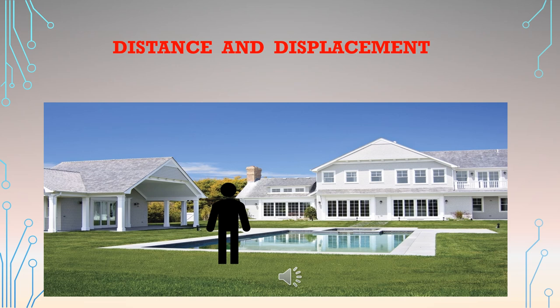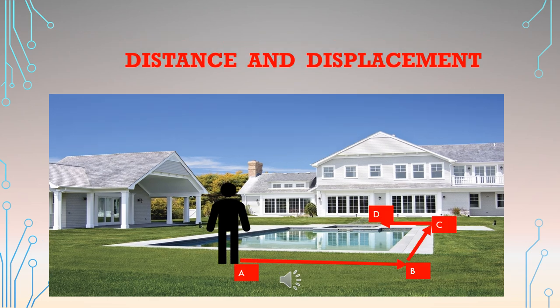Look at this picture: a man is standing in front of a pond and he has to reach his house. He turns to the right side, walks along the side of the pond, and crosses the points A, B, C, reaching point D which is near the front door.